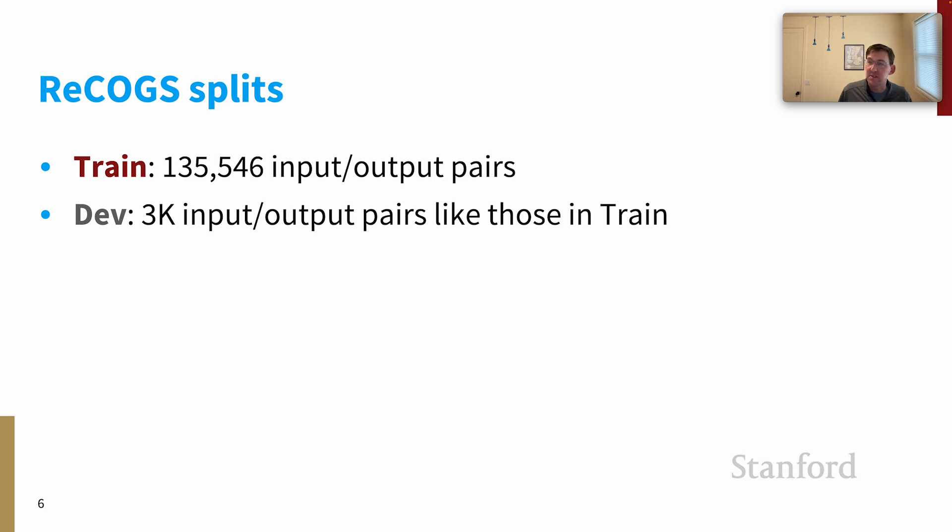The ReCOGS splits work like this. We have a large train set of almost 136,000 examples. And there is a dev set of 3000 examples that are like those in train. This is a sort of IID split.